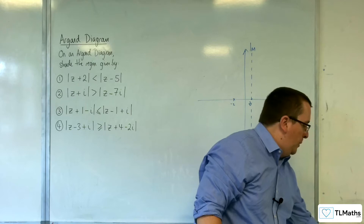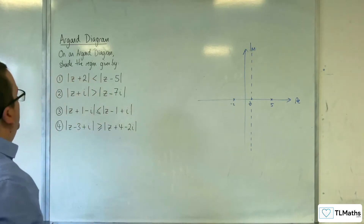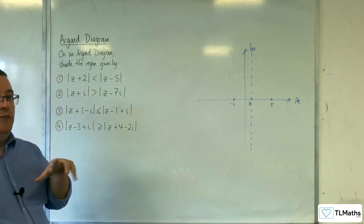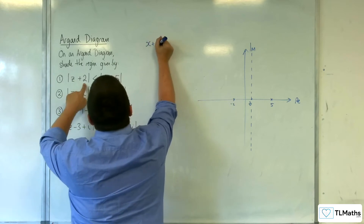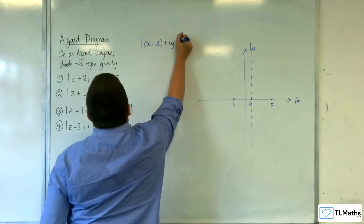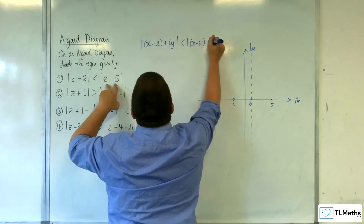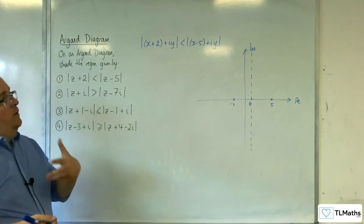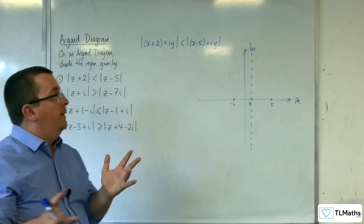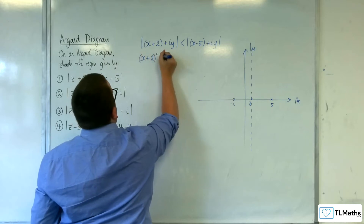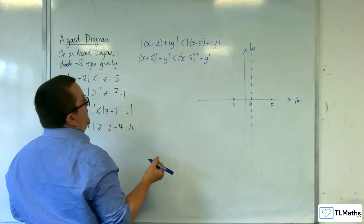Now what we're left with is to identify the correct region — which side should we be shading. If we reduce this and put it into Cartesian form: z plus 2 modded is x plus iy plus 2, so x plus 2 plus iy modded. And we've got that less than x plus iy take away 5 modded, so x take away 5 plus iy modded. Finding the lengths, we take the square root and then square both sides — that's not going to change the inequality. So we've got x plus 2 squared plus y squared is less than x take away 5 squared plus y squared.